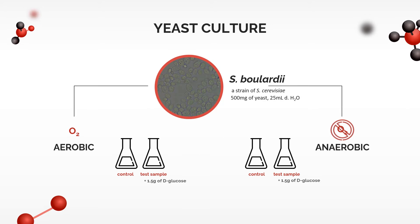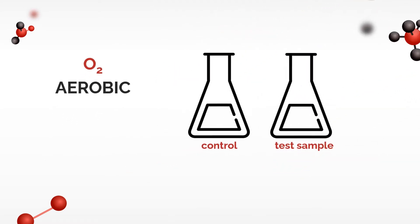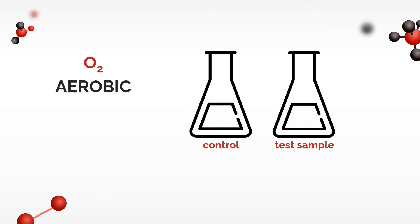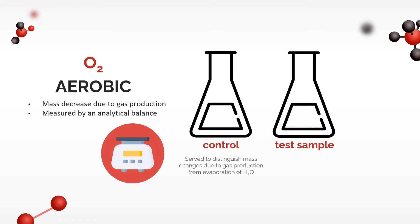In order to investigate the rate and extent of the yeast's aerobic and anaerobic reactions, weighing and volumetric measuring devices were used respectively. For aerobic respiration, the mass decrease of each reaction chamber due to gas production was measured at defined intervals using an analytical four decimal point balance. The control group served to distinguish mass changes due to the production of carbon dioxide from those that are due to the evaporation of water.